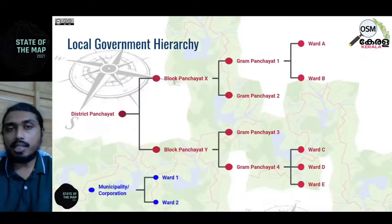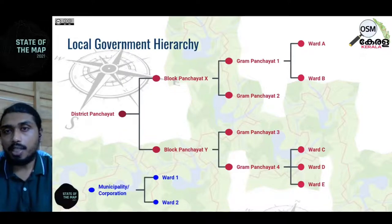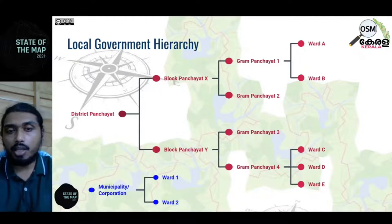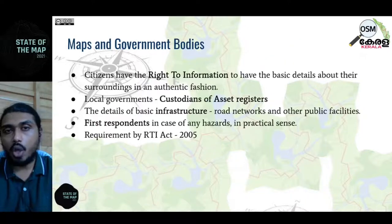Political boundaries are assemblies and parliament constituency, whereas the local government bodies consist of municipal corporation or municipalities or gram panchayat or block panchayat, then district panchayat. The general structure is: different wards combined to form gram panchayat, different gram panchayats combined to form a block panchayat, and different block panchayats combined to form a district panchayat.